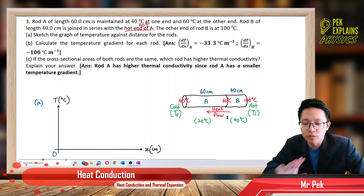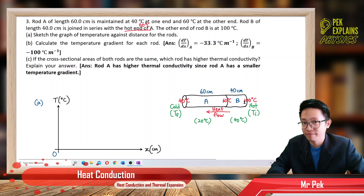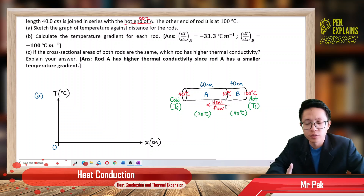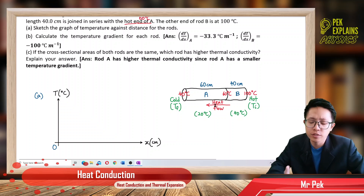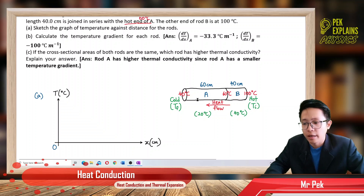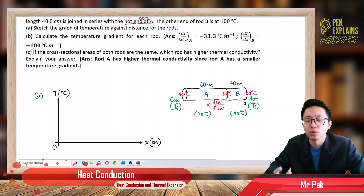Before drawing the graph, we need to analyze the direction of heat flow. Heat always flows from high temperature to low temperature — from hot to cold. The hottest end is 100 degrees Celsius (end of rod B) and the coldest is 40 degrees Celsius. So heat must flow from 100 to 40, meaning heat is flowing to the left.